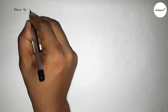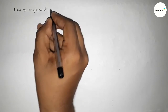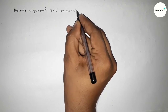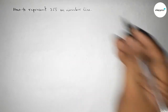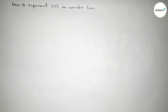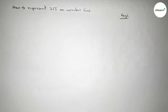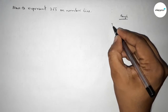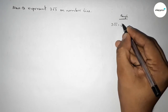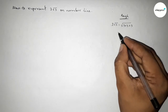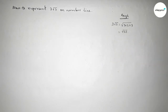Welcome to essay share classes. In this video we have to represent 3√3 on a number line. First, let's do some rough calculation: 3√3 can be written as √(3 × 3 × 3), which is √27.